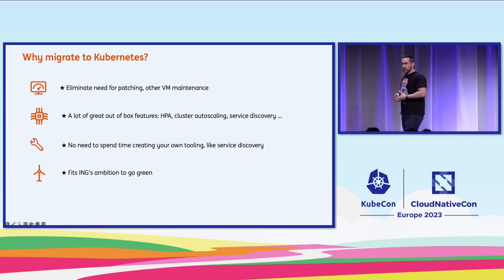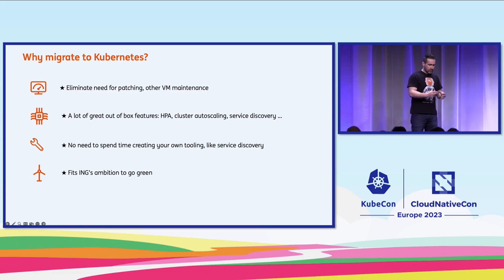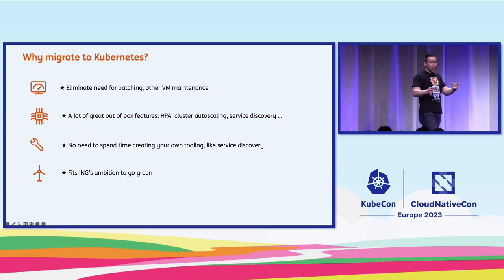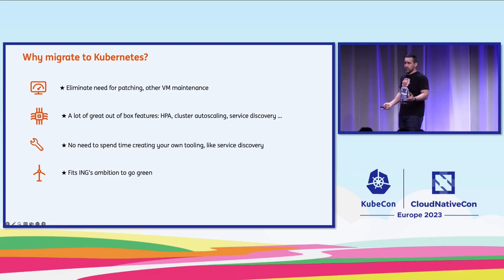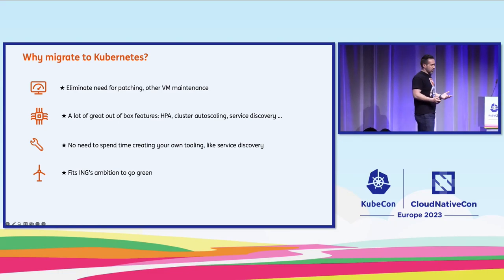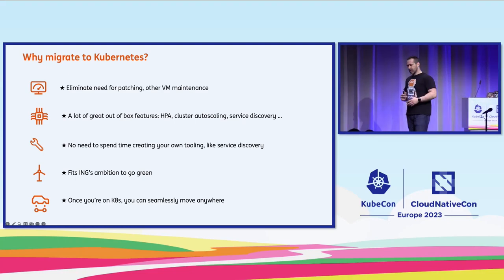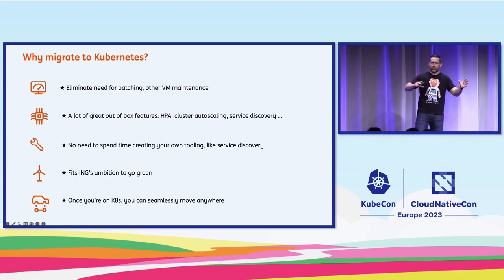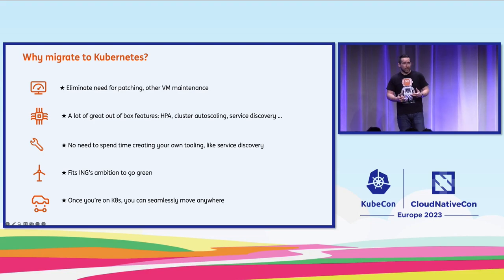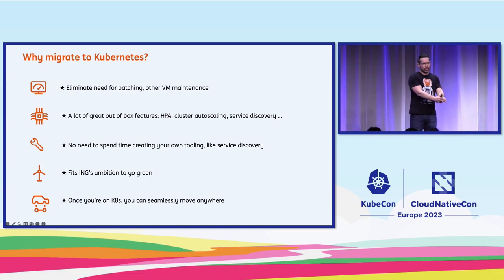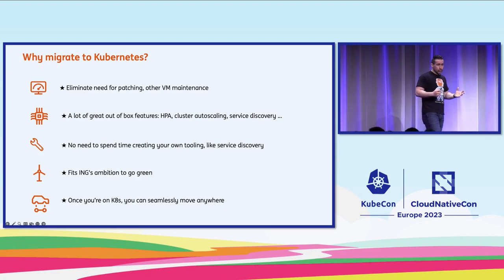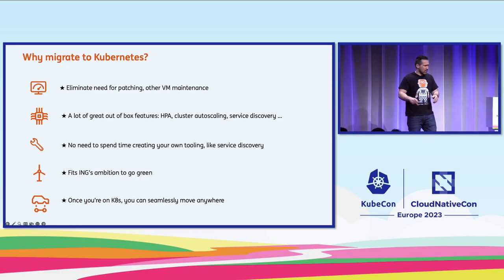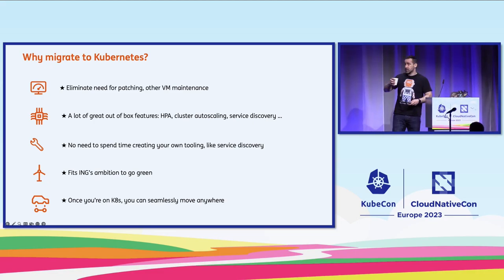One of ING's global ambitions is to go green. In the current VM setup, VMs are running on servers which are on all the time. With Kubernetes, you can scale up and down depending on workloads, consuming less energy and reducing costs. We also had team discussions about hypothetical public cloud scenarios, which made us realize we weren't very mobile in an existing VM setup. With Kubernetes, once all deployment services are part of YAML files or Helm charts, we could move anywhere — on-prem to on-prem or cloud to cloud. This was a big positive realization for the whole team.